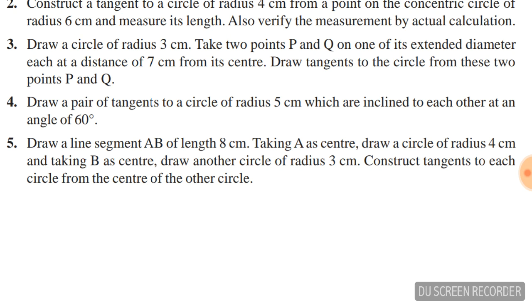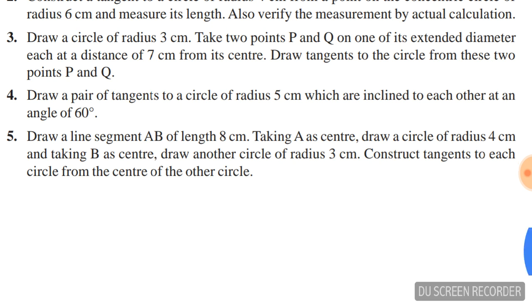Question number four: draw a pair of tangents to a circle of radius 5 cm which are inclined to each other at an angle of 60°.